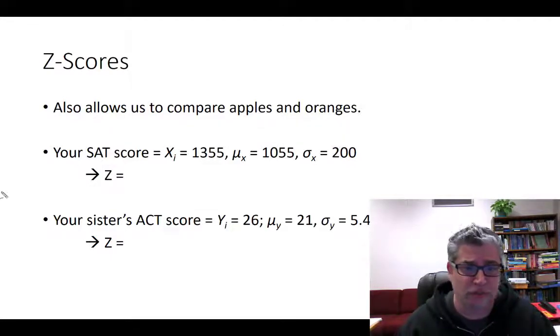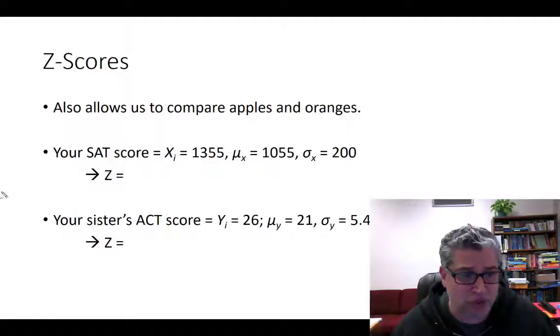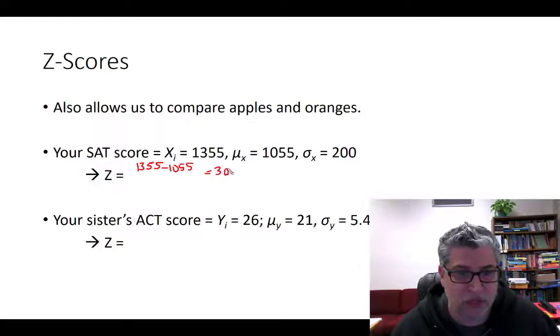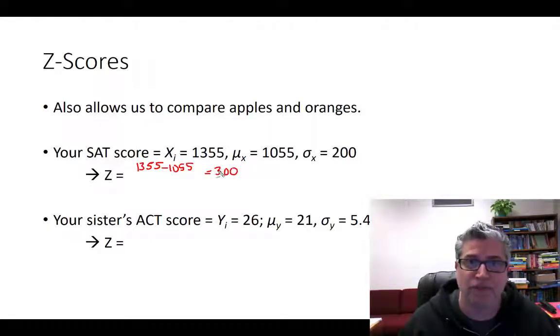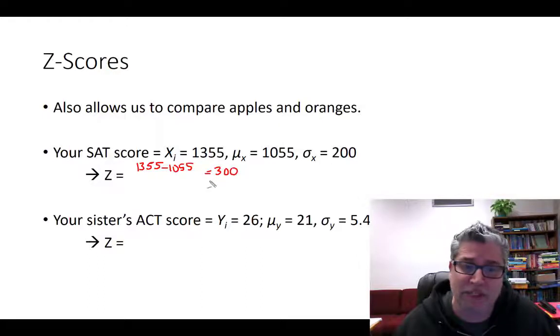So, you did a lot better than average. You did 300 points better than the average, right? 1355 minus 1055. That's 300 points better than the average. But, how many blah blahs is that? How many standard deviations?